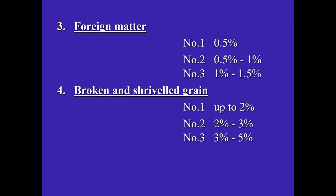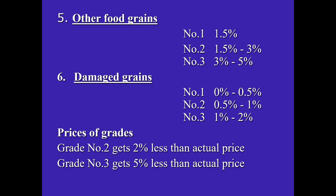For foreign matter, Grade 1 allows up to 0.5%, Grade 2 allows 0.5 to 1%, and Grade 3 allows 1 to 1.5%. For broken and shriveled grains, Grade 1 allows up to 2%, Grade 2 allows 2 to 3%, and Grade 3 allows 3 to 5%. For other food grains, Grade 1 (premium quality) allows not more than 1.5%, Grade 2 allows 1.5 to 3%, and Grade 3 allows 3 to 5%. Damaged grains also have specific criteria for each grade.